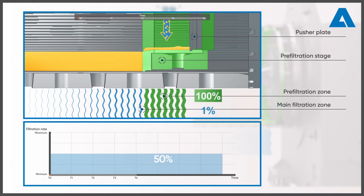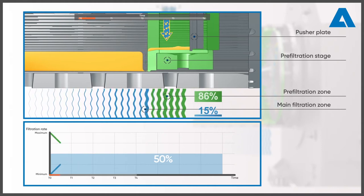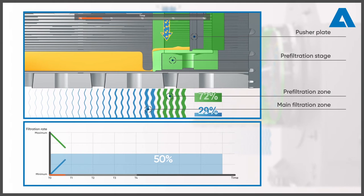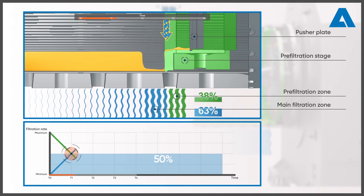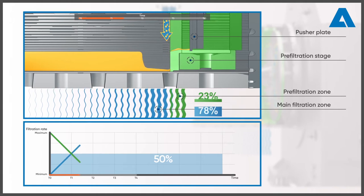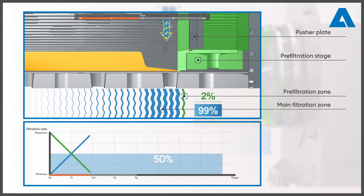The pre-filtration stage now moves to the right and is cleaned by the stationary pusher plate. It offers the suspension entering the centrifuge less and less filtration surface and its share of the overall filtration effect decreases. The cake falling down from the pre-filtration stage is not compressed and does not obstruct filtration.